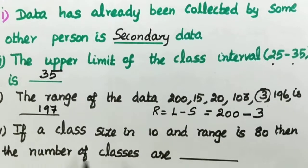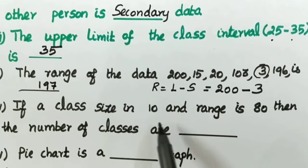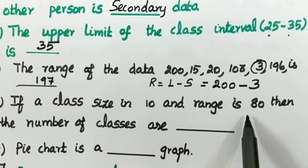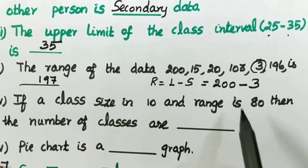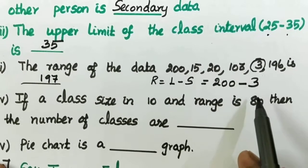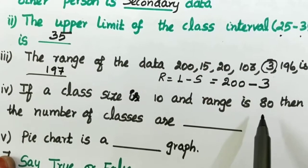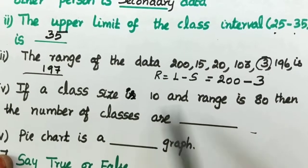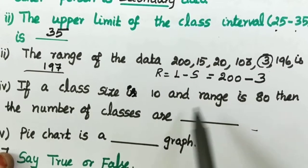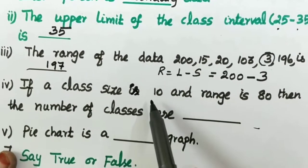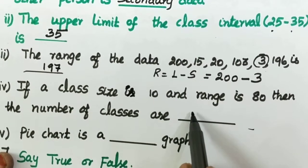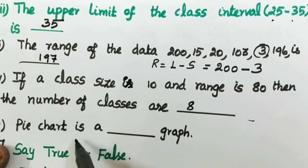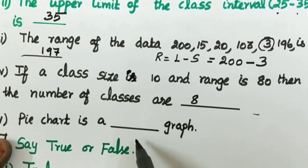The next one: if the class size is 10 and the range is 80, then the number of classes is calculated as range divided by class size — 80 divided by 10 — so the number of classes is 8. Pie chart is a dash graph.